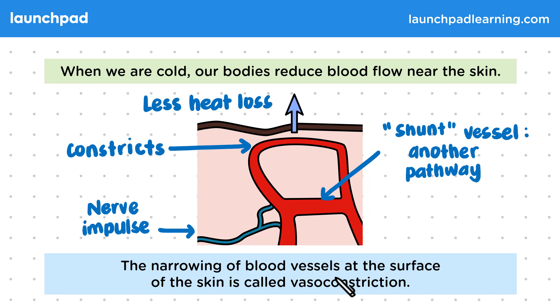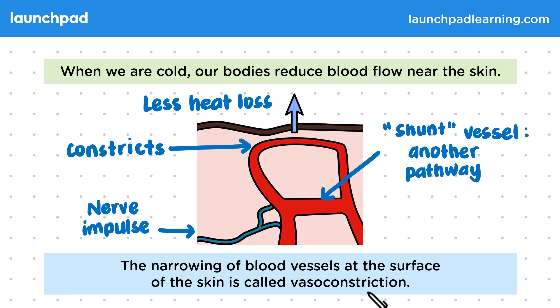The narrowing of blood vessels at the surface of the skin is called vasoconstriction. Vaso refers to vascular, meaning to do with the blood vessels, and constriction means tightening.